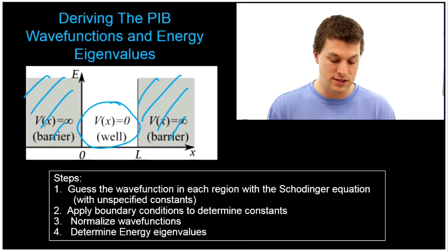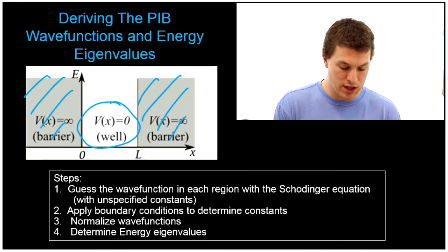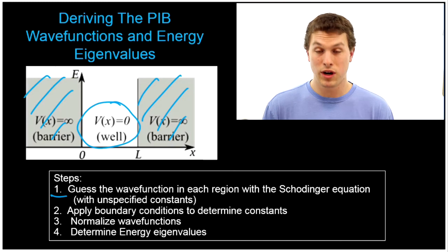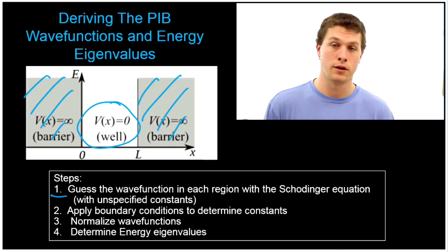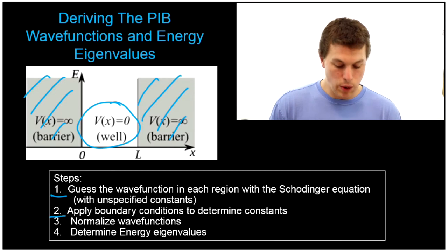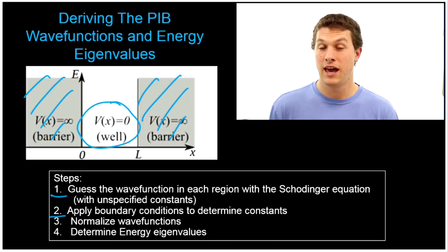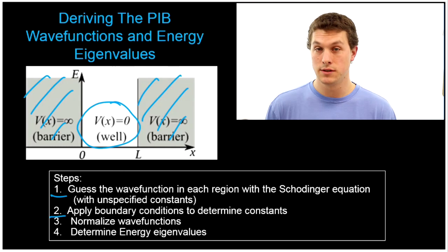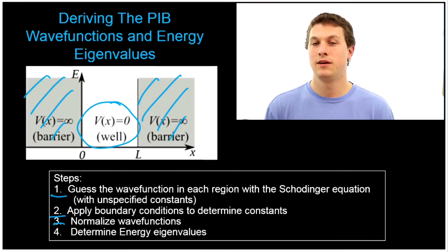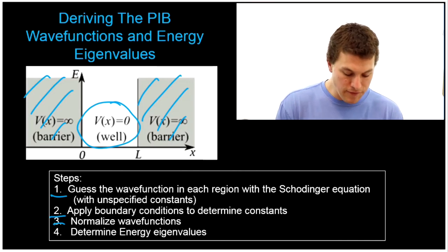I've broken down the process into five key steps. First, we're going to guess the general functional form of the wave function — we'll have some undetermined constants, maybe a sine function or a cosine function multiplied by some constant. In step two, we apply boundary conditions: how does our electron behave at the edges of the well to figure out more about those constants. Then we normalize the wave function to find our last constant.